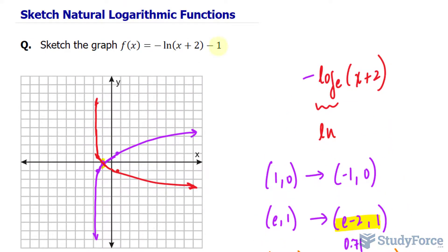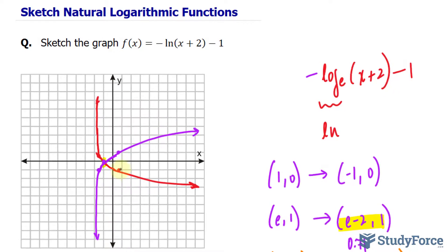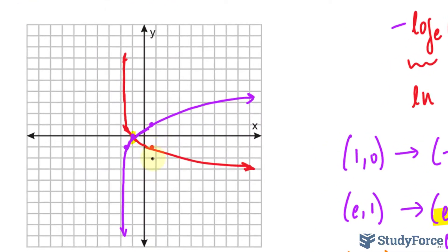All right. Moving on to negative 1. When you apply something at the very end of the function, in this case minus 1, that means all of these points will be shifted one unit downwards. If it were positive, it would go upwards. This point will go down 1, that will go down 1, and that will go down 1.